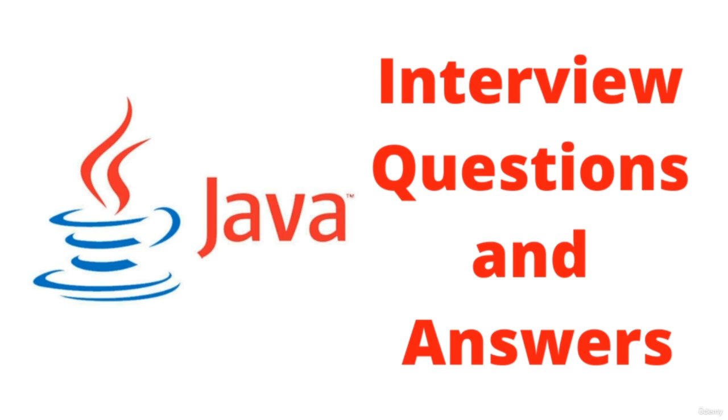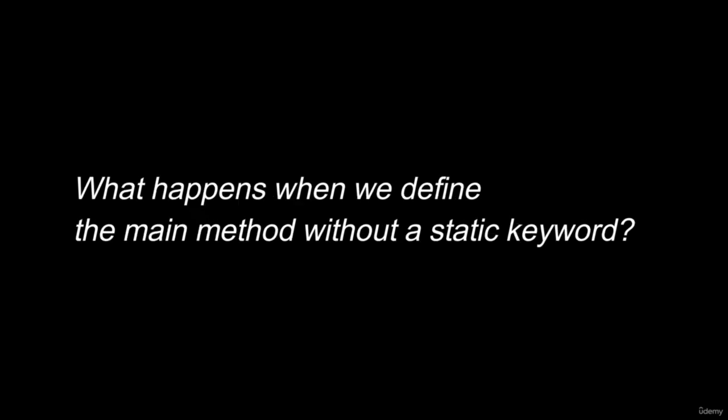Why do we declare the main method as static? We declare the main method as static since it does not require any object and loads the methods during class loading. Also, the main method is the entry point for any execution in Java. What happens when we define the main method without a static keyword? The Java code compiles successfully but it will throw a 'no such method' error.